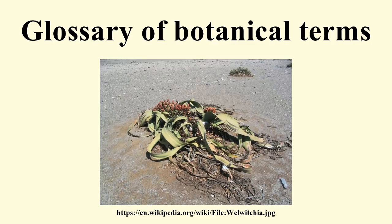See also trifid. Bifoliate: having two leaflets. Bifusiform: fusiform with a pinch in the middle. Bilabiate: having two lips, e.g., the form of the petals in many irregular flowers. Bilateral: arranged on opposite sides, e.g., leaves on a stem. Biloculate: having two locules, e.g., in the anther. Binomial: making use of names consisting of two words to form the scientific name in a Latin form, where the first is the name of the genus to which the species belongs, and the second is the epithet given to that species to distinguish it from others in the same genus.